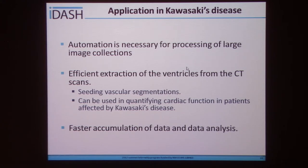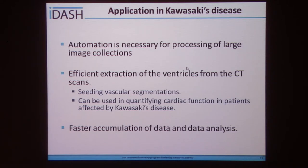Automation is necessary for processing large image collections. By building the active shape model, it will provide efficient extraction of ventricles from CT images, which could provide seeding for vascular segmentations and can also be used in quantifying cardiac function in patients affected by Kawasaki disease. It would also result in faster accumulation of data and data analysis.